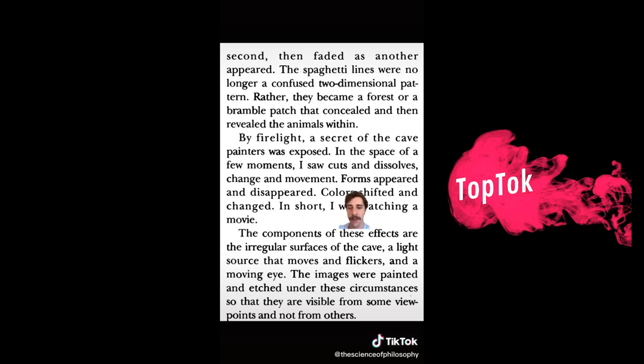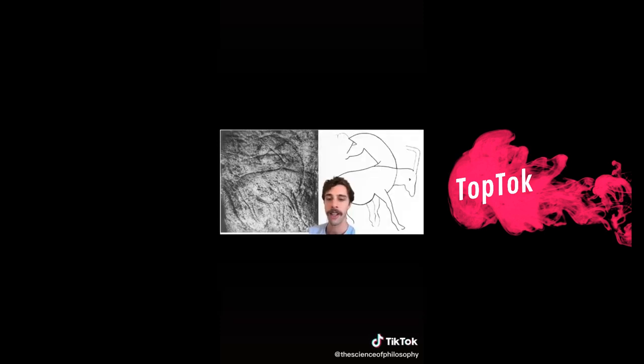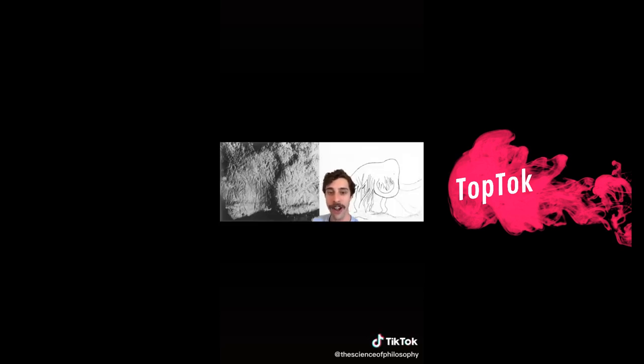'By firelight a secret of the cave painters was exposed. I saw cuts and dissolves, change and movement — forms appeared and disappeared, colors shifted. In short, I was watching a movie.' Understood this way, the antelope with two heads under the dance of firelight is an antelope going from grazing to checking for predators, and the mammoth with two or three trunks is a mammoth in motion swinging his trunk. There's something beautiful about knowing that hundreds of thousands of years ago, ancient humans descended into the depths to watch movies.